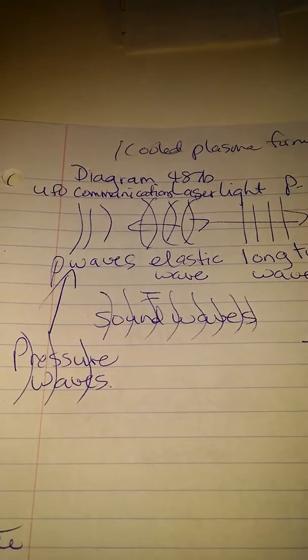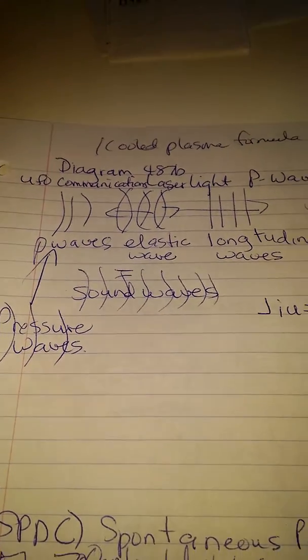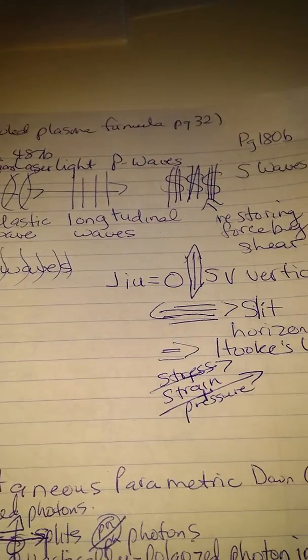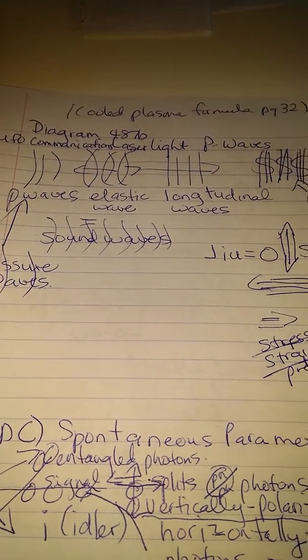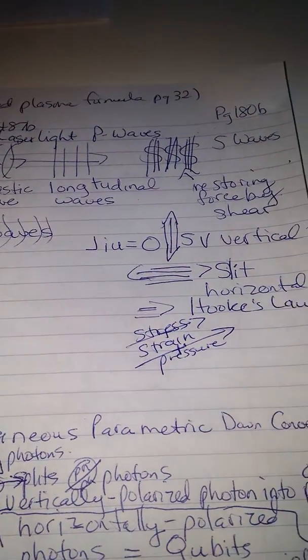Okay, this is diagram 487, UFO communications laser light P-waves. And what it shows is the P-waves, elastic wave, longitudinal waves.